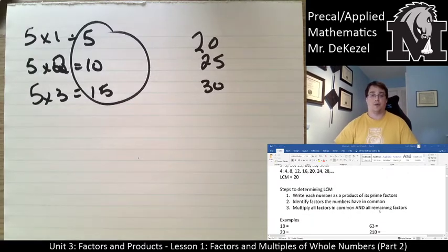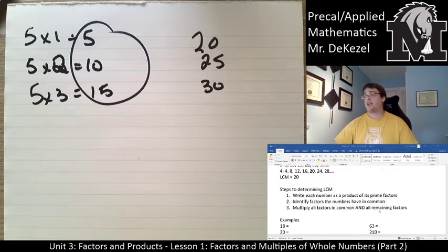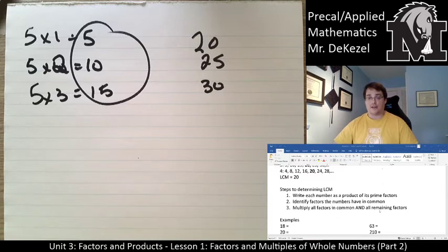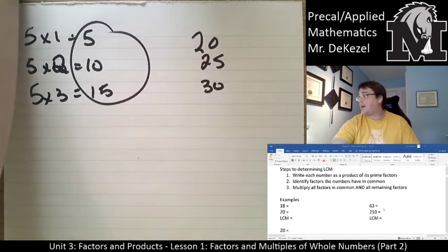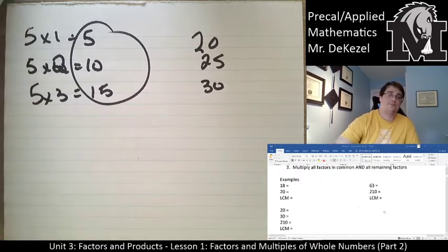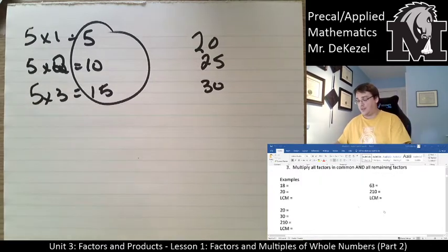We're going to have some steps to determine the lowest common multiple no matter what the two numbers are, whether big or small. First, write each number as a product of its prime factors. Then, identify the factors the numbers have in common. Finally, multiply all factors in common and all remaining factors. I'll show you what I mean — it will make sense. You might need some scrap paper to do the factor trees.